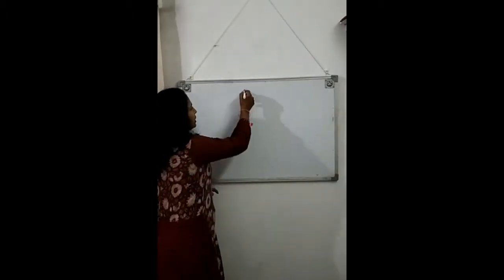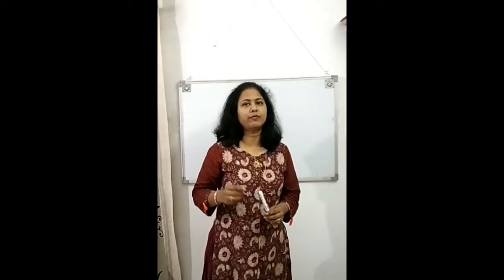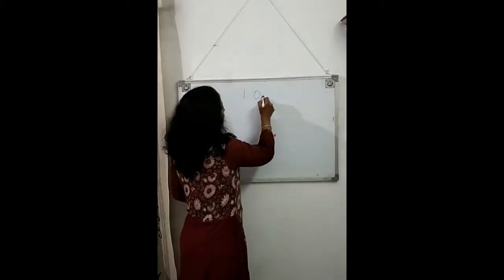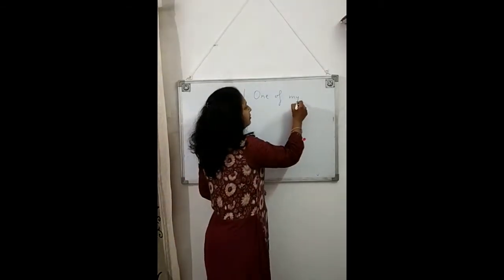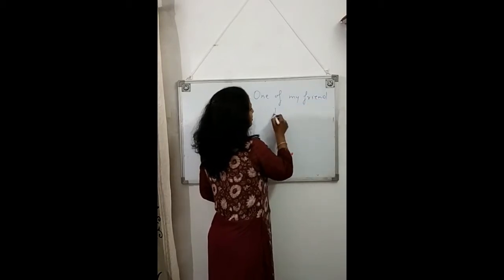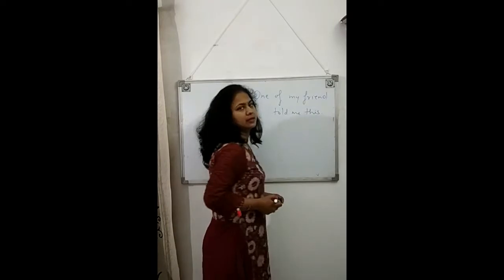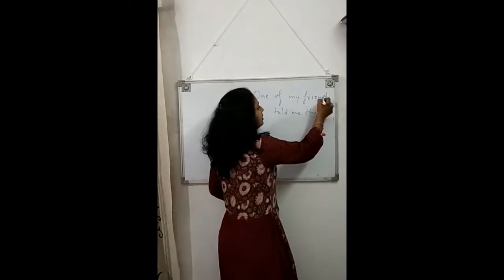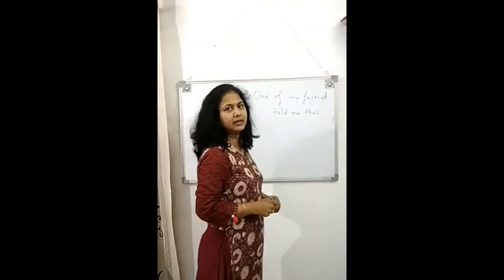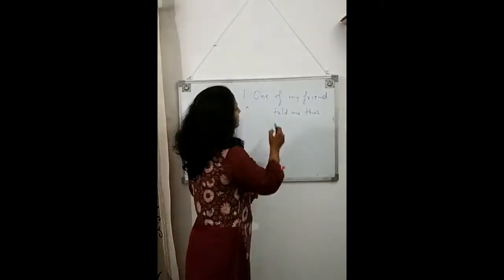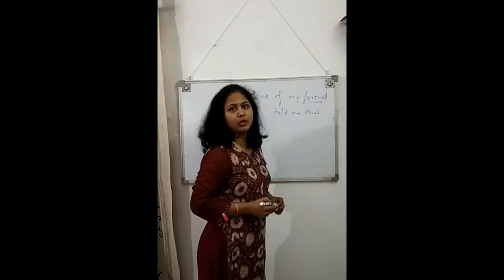First one, there is one commonly used sentence with 'one of.' For example: 'One of my friend told me this.' In this sentence, this one is incorrect because we use 'one of my friend told me,' whereas...